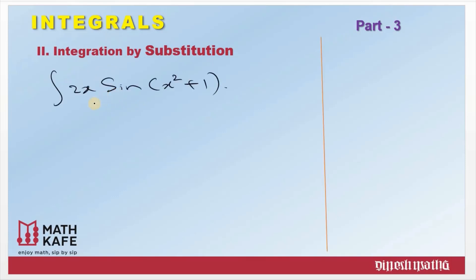I have taken an integral of 2x into sine of (x² + 1). I need to integrate 2x into sine of (x² + 1). This is the thought process. Think about it this way: do I have a product rule? Absolutely no, there is no product rule here and it will not work.